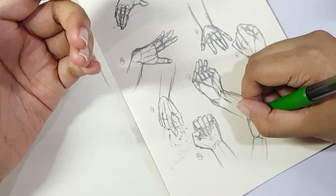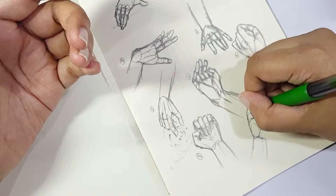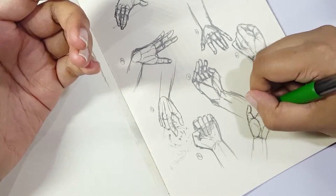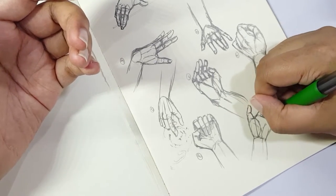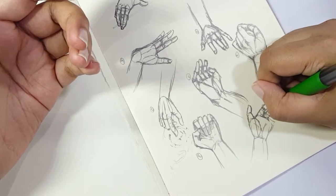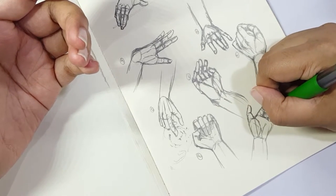So generally, I start with the palm area, which is like this. It's like a really thin, squarish thing. And then I would draw the triangular area where the thumb is, and I would draw the thumb first.